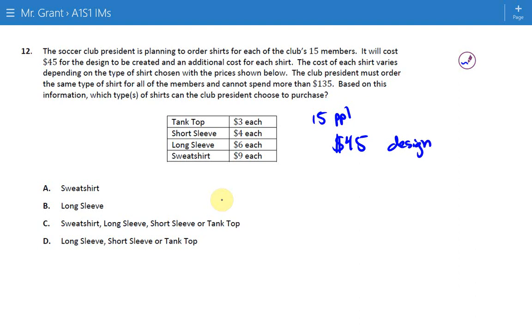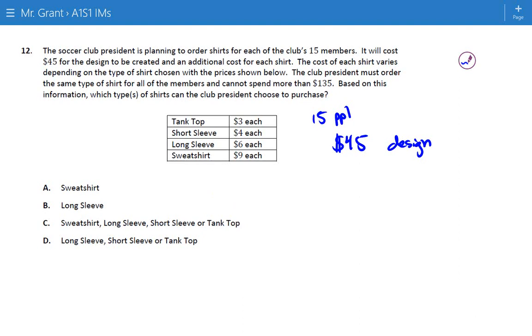The club president must order the same type of shirt for all members and cannot spend more than $135. Based on this info, our max amount of money is $135. Based on this information, which types of shirts can the club presidents choose to purchase?